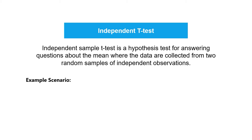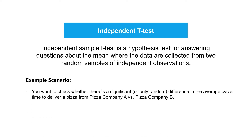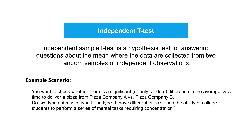Examples where you can use the independent t-test include: checking whether there is a significant or only random difference in the average cycle time to deliver a pizza from pizza company A versus pizza company B, and whether two types of music — type 1 and type 2 — have different effects upon the ability of college students to perform a series of mental tasks requiring concentration. Notice that in each scenario, we have two separate groups and compare something between them.